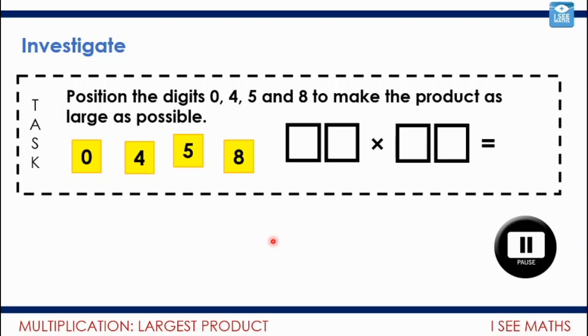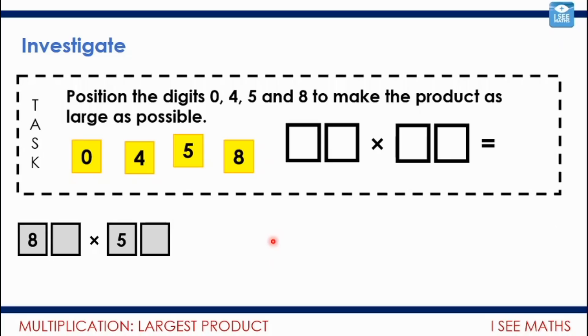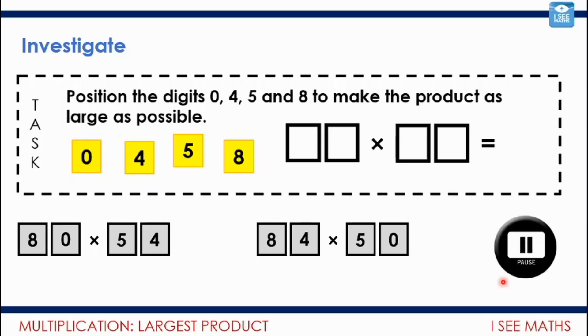I hope you've had a good go now. Let's unpick some of the thinking here. I think that one thing that we will need to figure is I'll need the largest digits, the 8 and the 5, in the 10s positions. And the smallest digits, the 0 and the 4, in the 1s positions. So, it will be 80-something multiplied by 50-something to make the product as large as possible. But that leads to the question, I guess, of this. Which way around should I position the 0 and the 4? Or doesn't it matter? 80 multiplied by 54. 84 multiplied by 50. Which will give the larger product? Or will the product be the same, I wonder? Why is that? I wonder how well you can explain that and your thinking there. Pause the video. Think and explain.